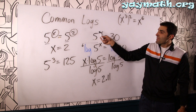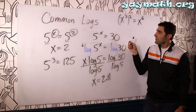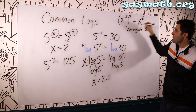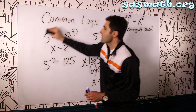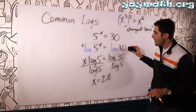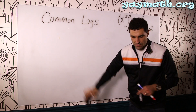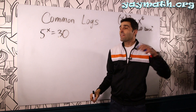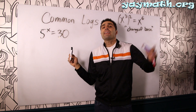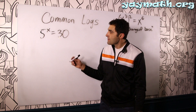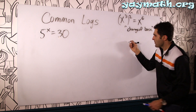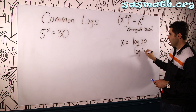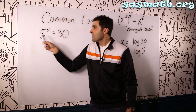Now we're going to explore this equation using what's called the change of base formula. The book has this, so let's explore it. Starting again from 5 to the x equals 30, and we already established that x equals log 30 over log 5. I want to make sure we hold onto that from our previous equation.